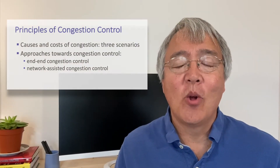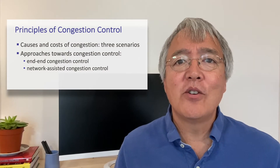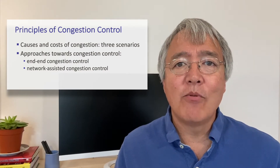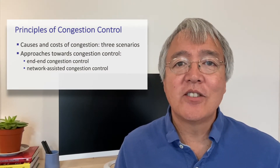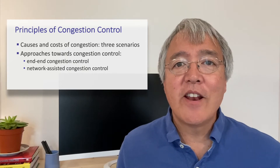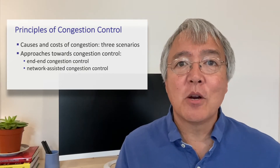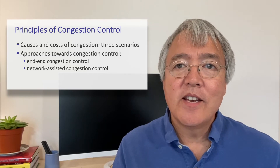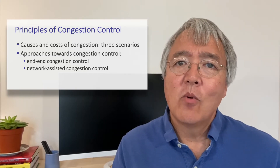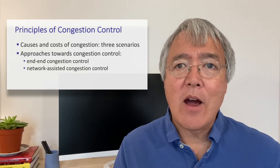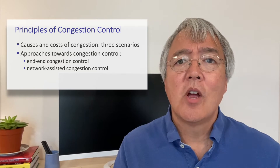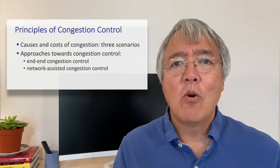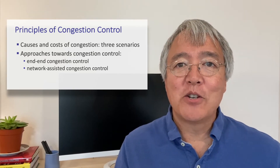In this section we're going to take a big-picture view of congestion control, really looking for a principled understanding of both the causes and the costs of congestion. We'll identify two basic approaches for dealing with congestion. In the next section we're going to take a look at TCP and how it actually implements these principles, but for now we're going to step back and take the big-picture view.